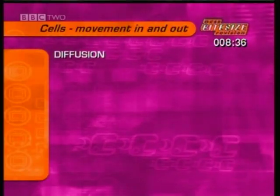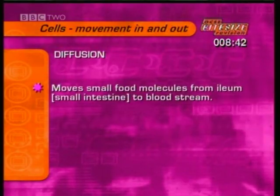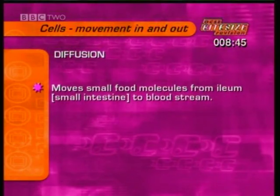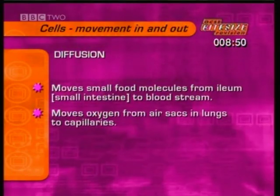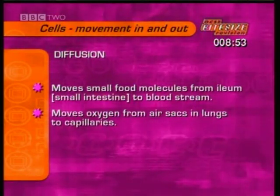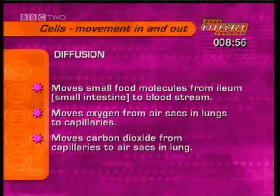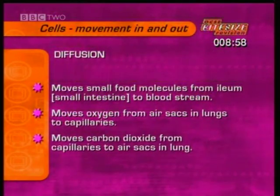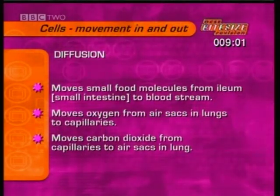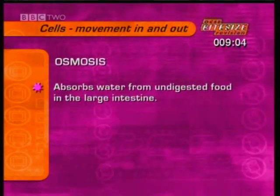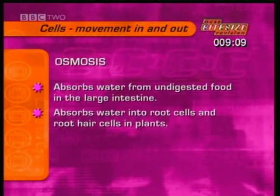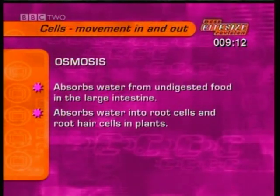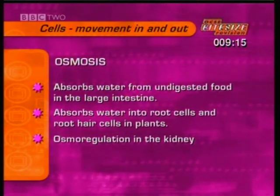There are many examples of diffusion and osmosis in the human body. For example, diffusion moves small molecules of digested food from the ileum (the small intestine) into the bloodstream. Diffusion also moves oxygen from the air sacs in the lungs to the capillaries, and moves carbon dioxide from the capillaries to the air sacs. Osmosis absorbs water from undigested food in the large intestine, absorbs water into the root cells and root hair cells of plants, and is involved in osmoregulation in the kidney.